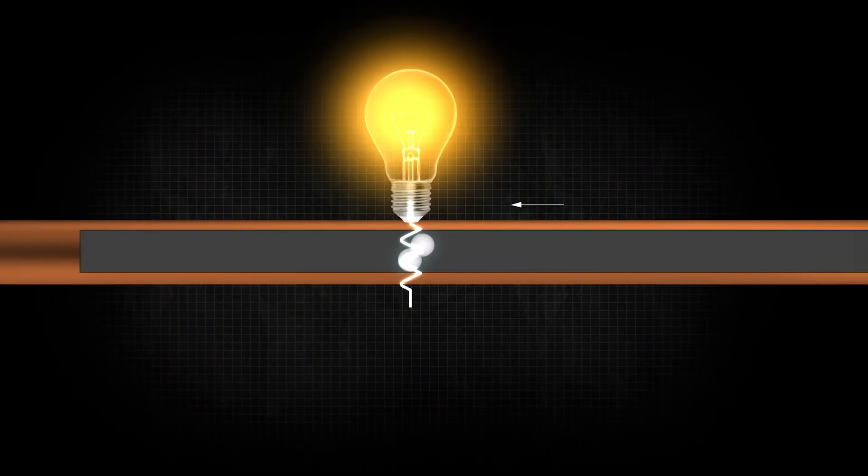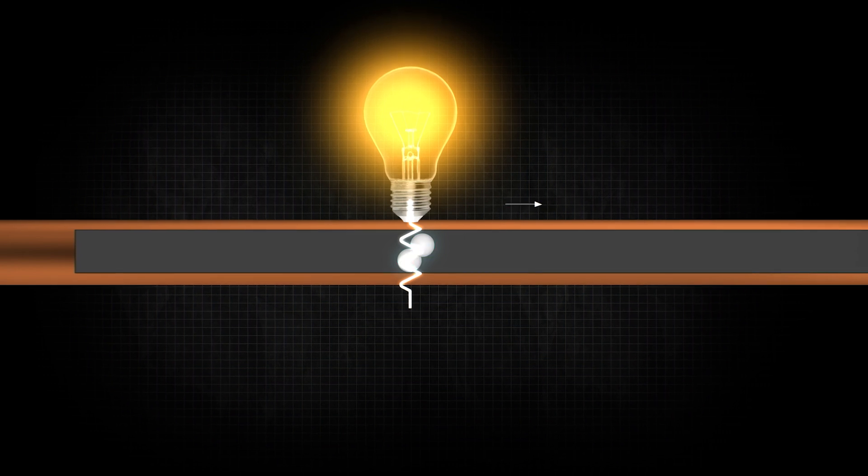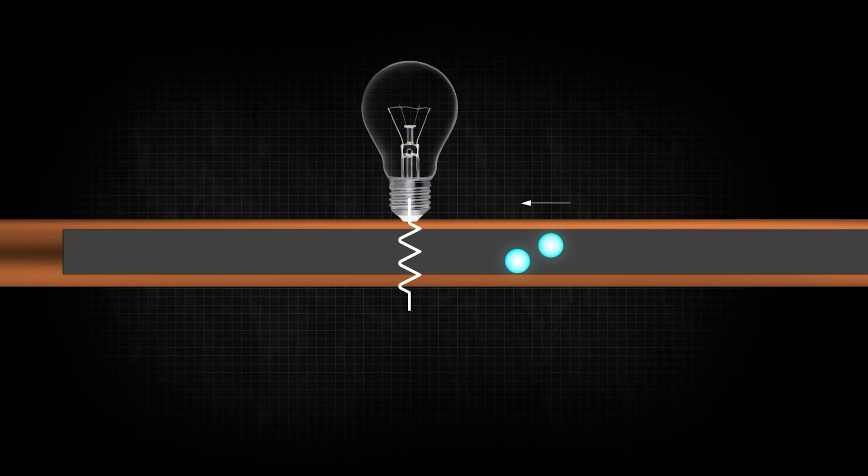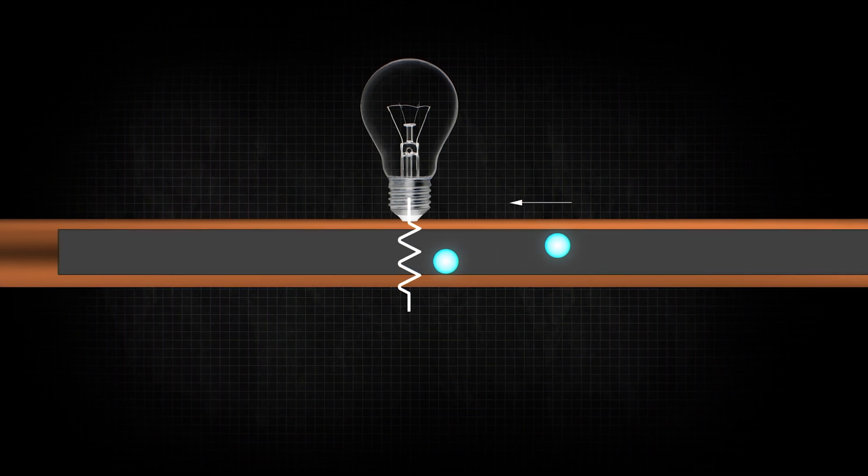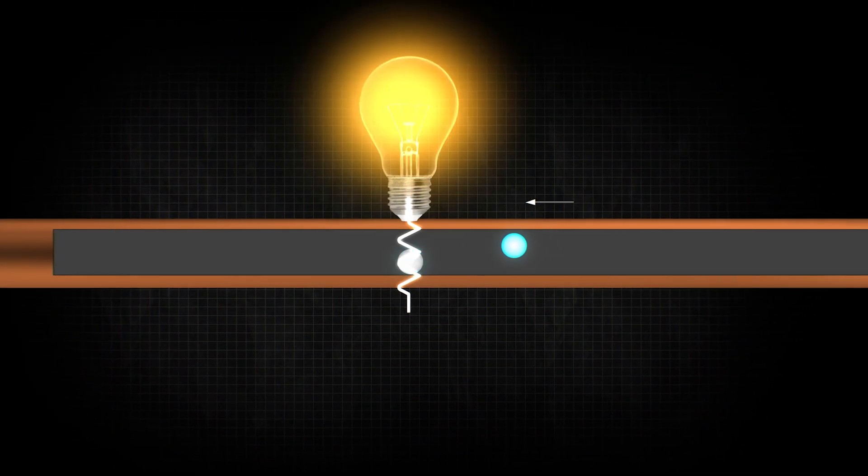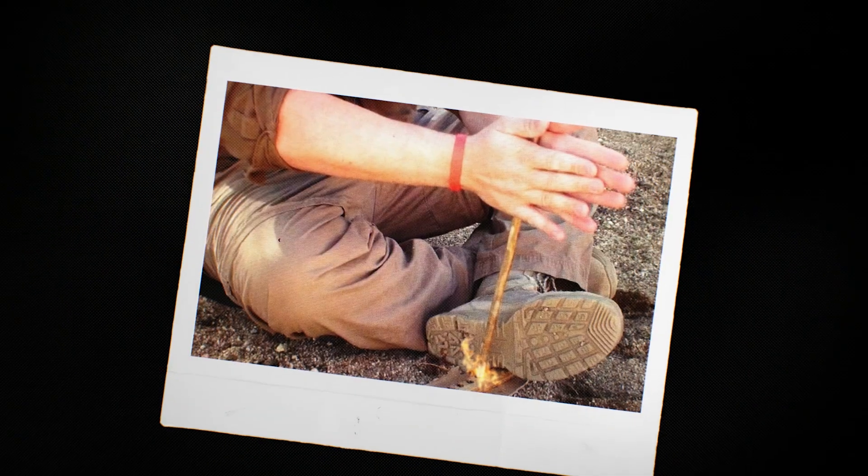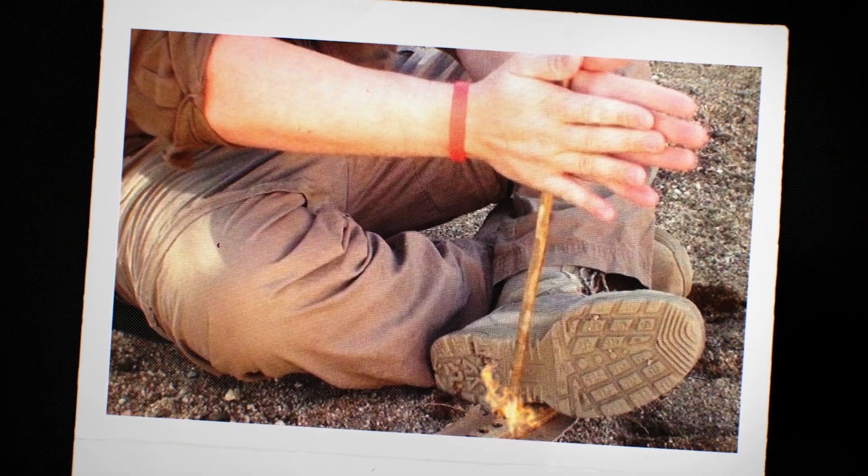When the electron is pulled back by the alternating electric field, it accelerates again, gains energy from the field. But once again, has its energy taken away by the resistor. And then the cycle repeats. The back and forth movement of the electrons is like trying to make a fire by spinning a stick over dry branches.